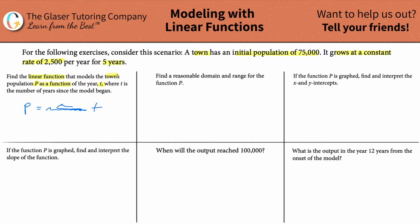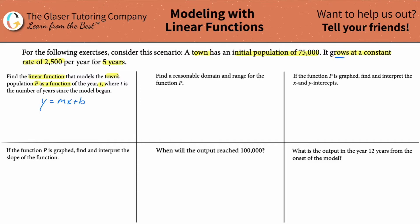We need to figure out a linear model. The reason I'm going to use a linear model — y = mx + b — is because they told us it grows at a constant rate. In this problem they were nice because they told us explicitly that it was constant. That's why you need to do many problems and practice, so you can see the different ways these problems are phrased.